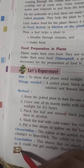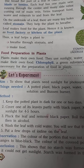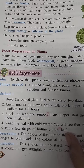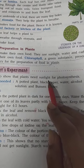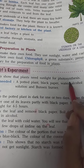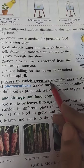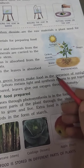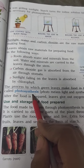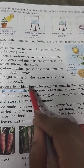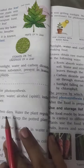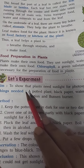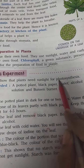Open page number 42. There is an activity we will discuss today. This activity is related to the fact that plants need sunlight for photosynthesis. The process by which green leaves make food in the presence of sunlight is called photosynthesis. The aim is to show that plants need sunlight for photosynthesis.